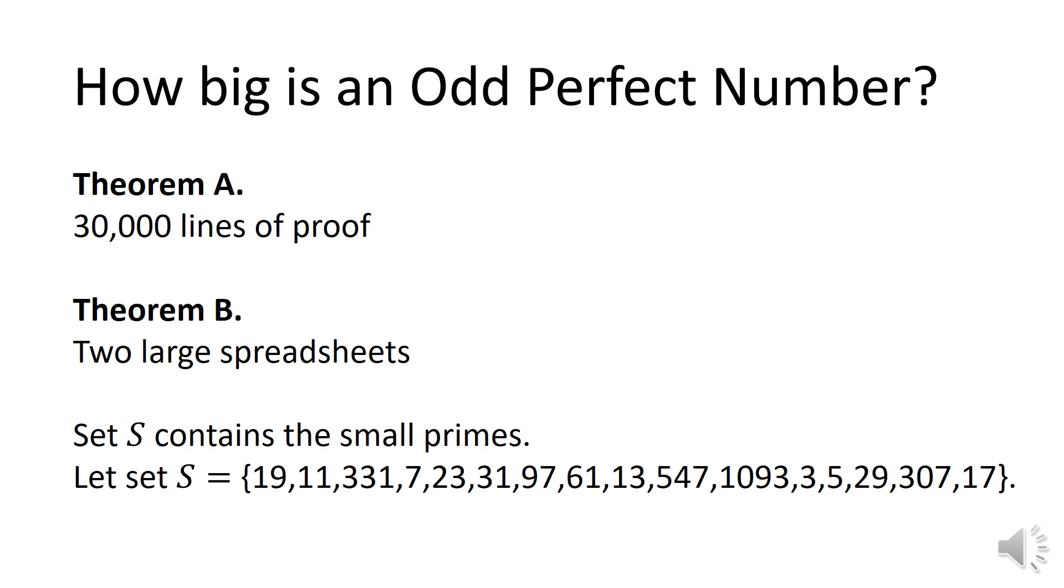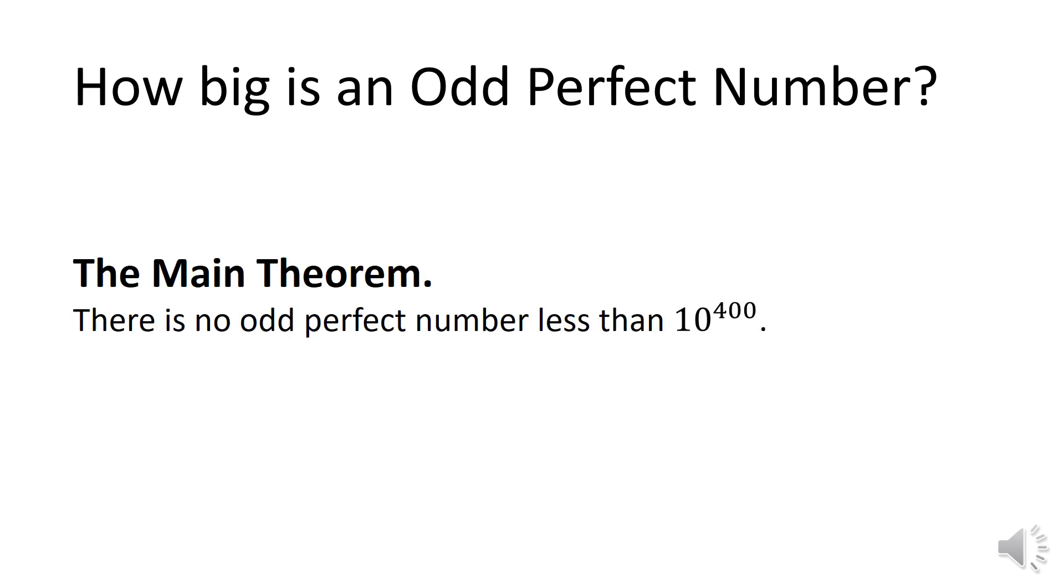Listed in the order they are used in Theorem A, will we discuss them? No. The proof of the main theorem follows immediately from Theorem A and Theorem B. The main theorem: there is no odd perfect number less than 10 to the 400.